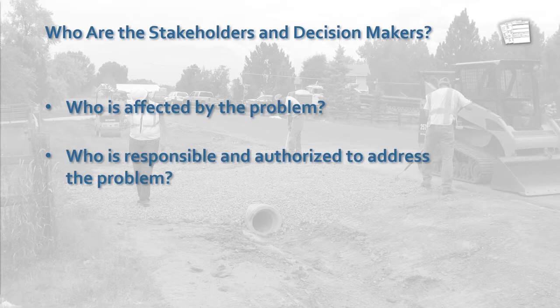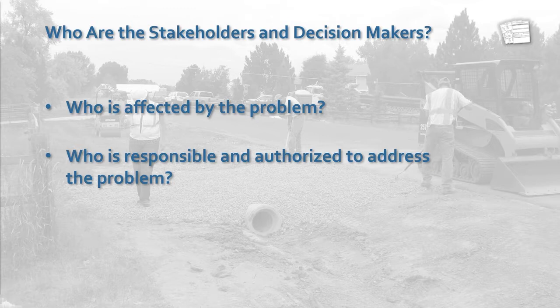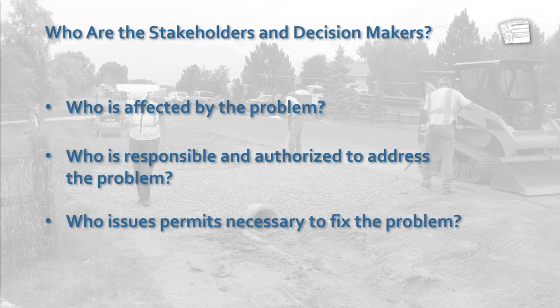Equally important is determining who are the agencies or entities authorized to make the final decisions to address the maintenance or damage issue. Determining those authorized to make these decisions may not be immediately clear, so maintaining good communication with all parties throughout this process keeps everyone informed as the investigation progresses. Also, it is beneficial to determine if the issue may require permitting for a potential fix. This could include federal, state, or local permitting agencies, and those permits could include things like environmental or floodplain permits.